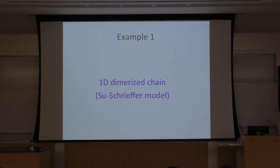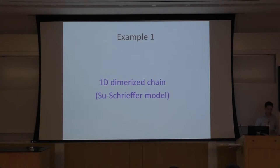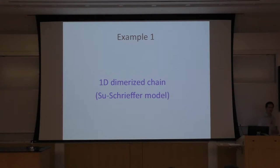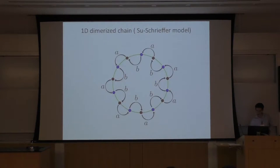In the morning lecture, I will mostly focus on non-interacting systems. There is no degeneracy in the normal case for the morning session, except for the last part. So I can mention three examples this morning. The first example would be the one-dimensional dimerized chain — the SSH model. It's a very simple model; it's a non-interacting tight-binding model.